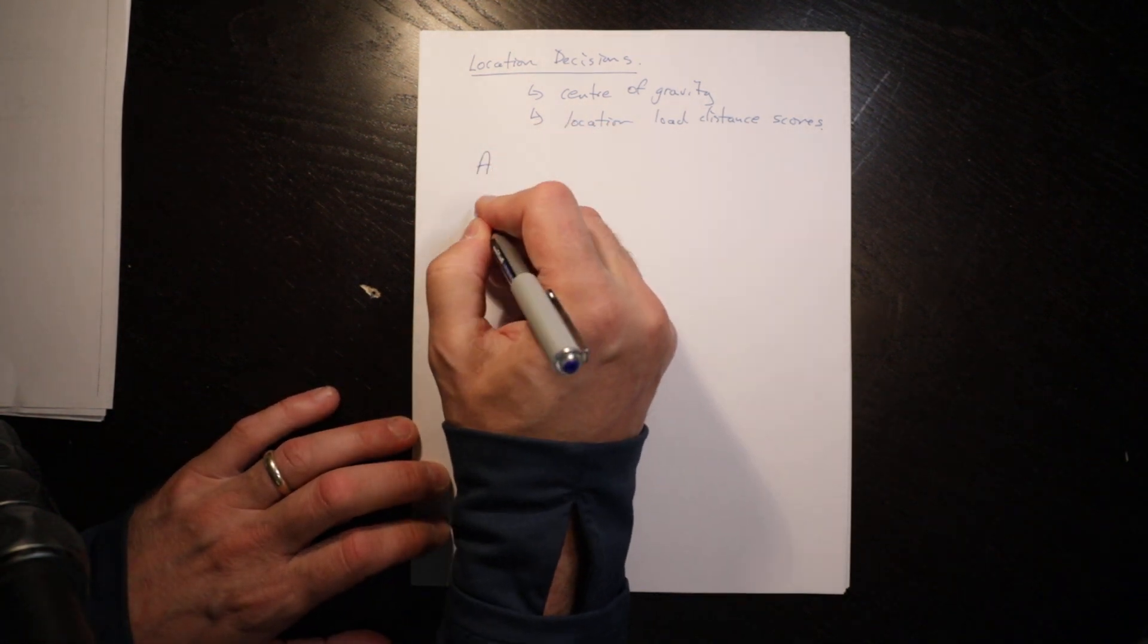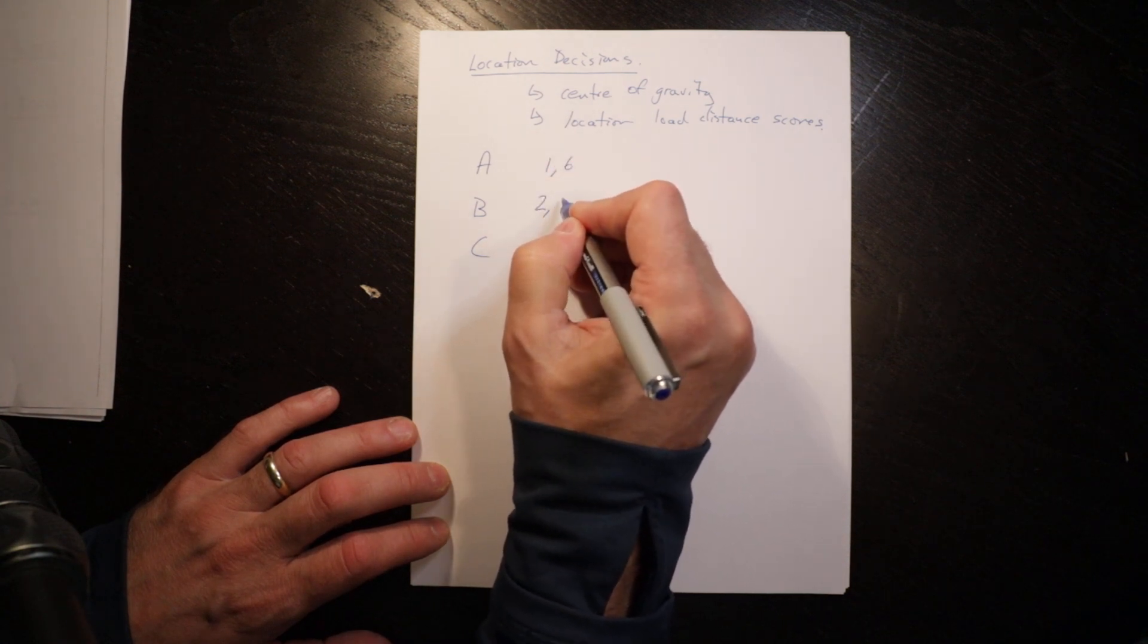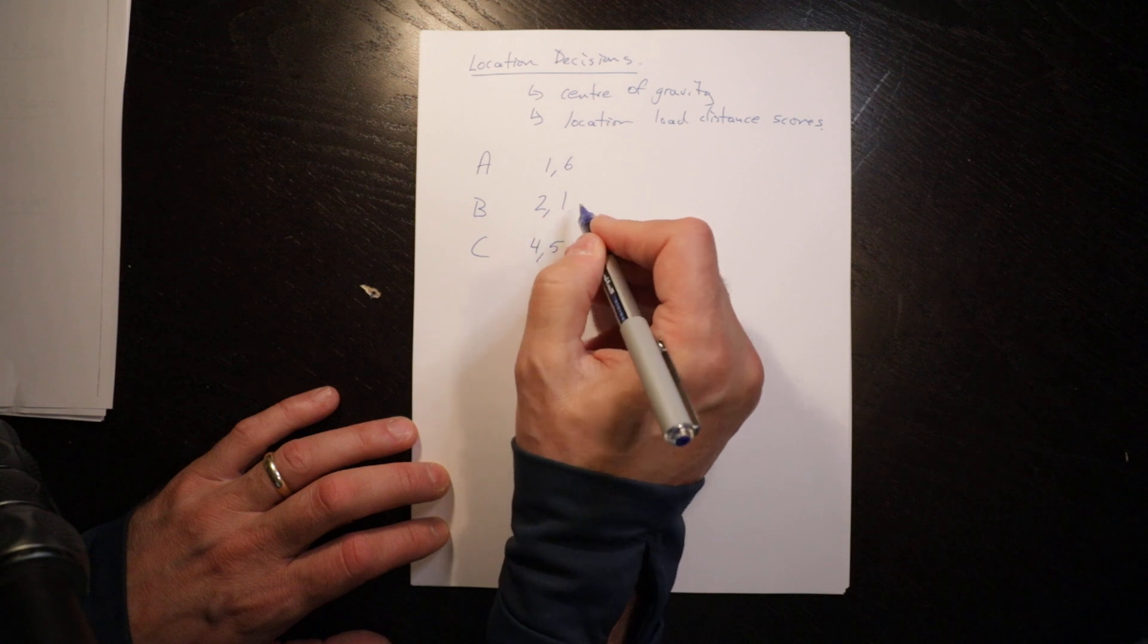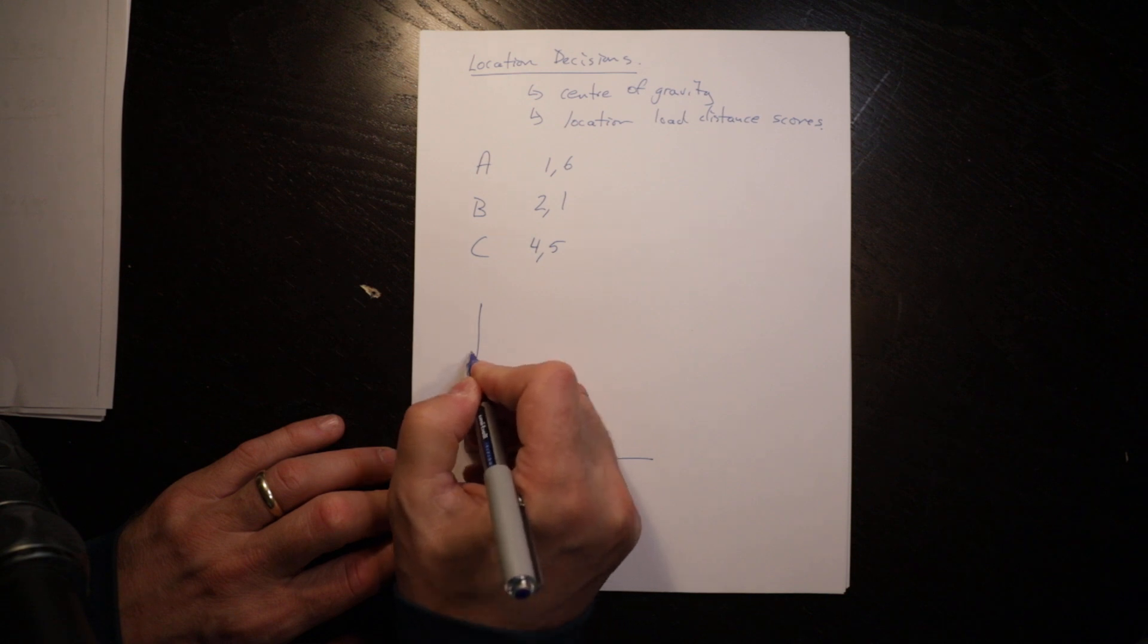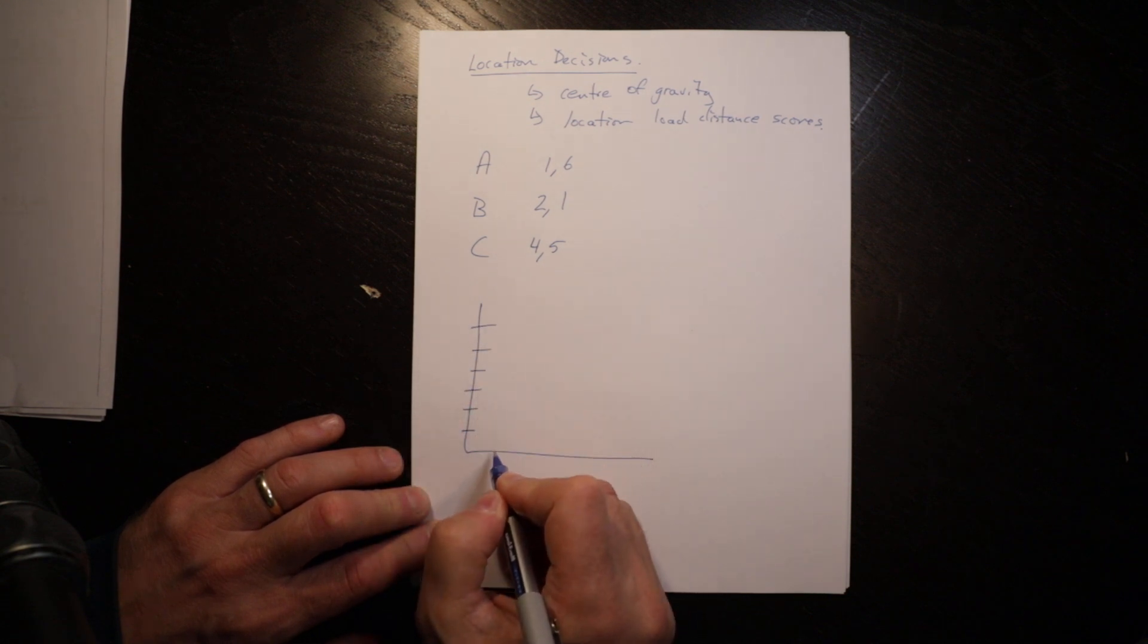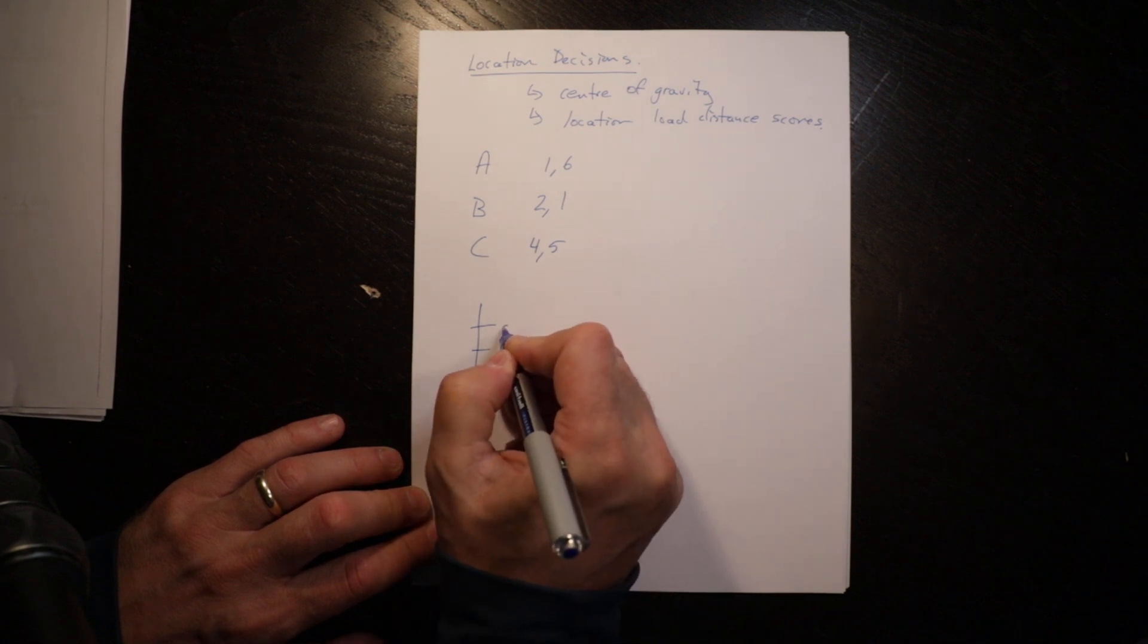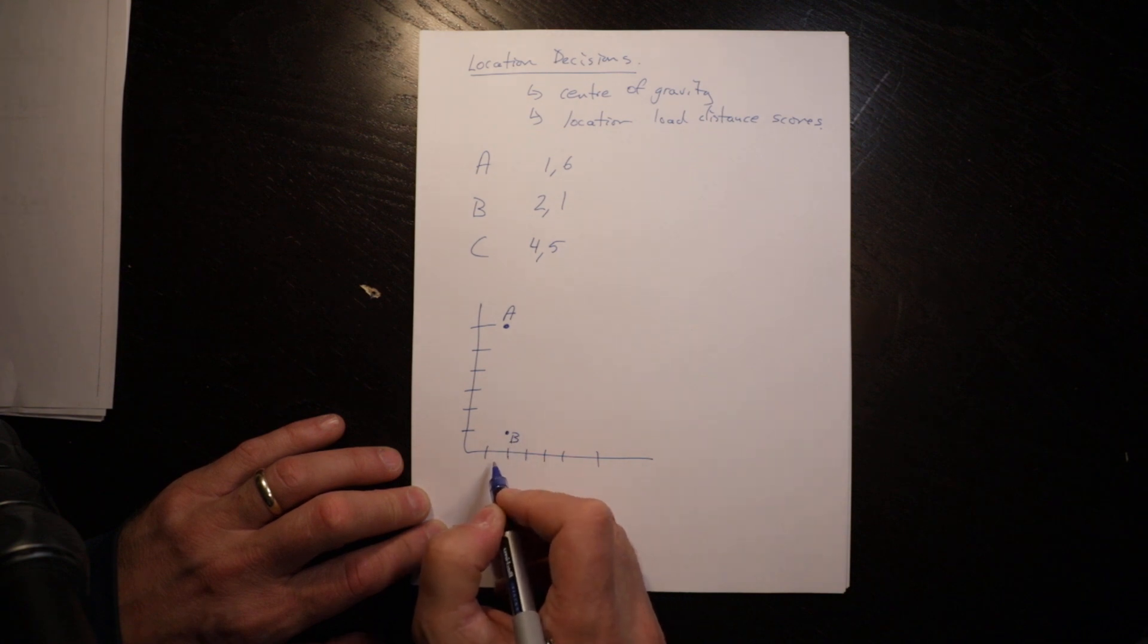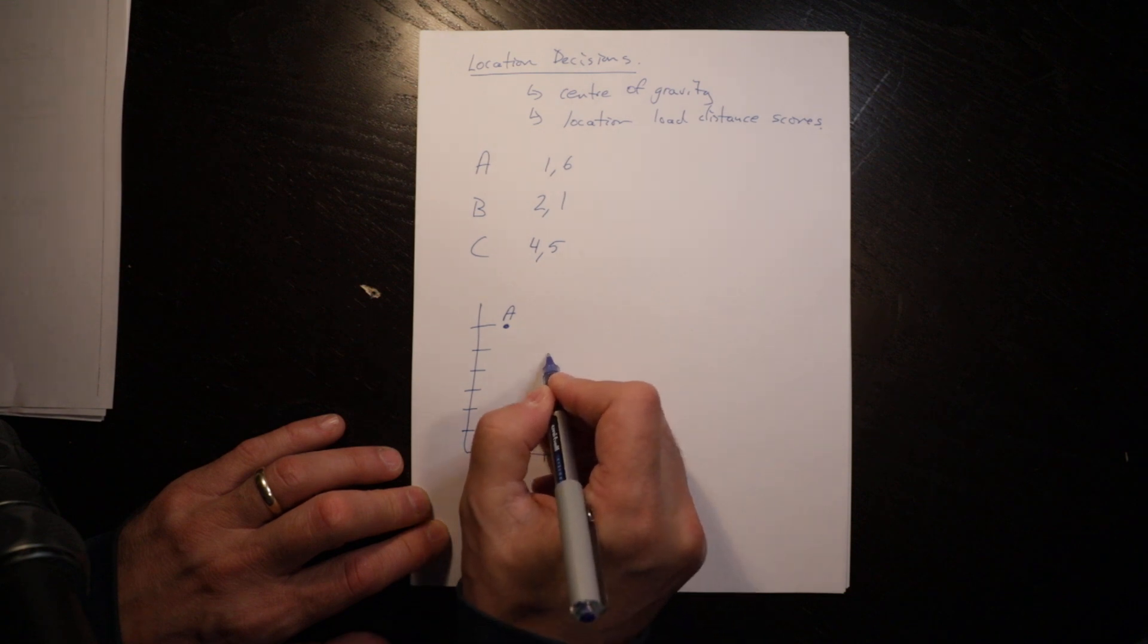Let's look at three places A, B, C. The location of A is 1,6, location of B is 2,1, location of C is 4,5. That's just on a grid. So A is 1,6, B is 2,1, and C is 4,5.